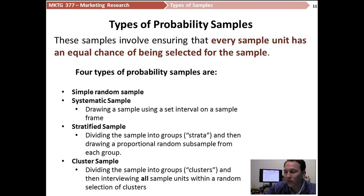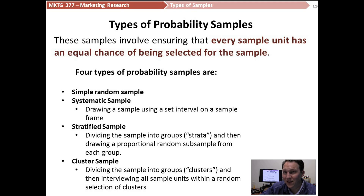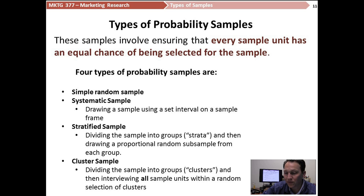A simple random sample is useful when there's a broad sample you can draw from and there are no concerns about representation of different groups — you're not worried that more women will participate than men, for example. It used to be pretty difficult, but with computers it's easy. You assign random numbers to everybody, sort by those random numbers, and take however many you need. For example, if I needed 500 people out of a list of 10,000, I'd assign everyone a random number and take the top 500 after sorting.